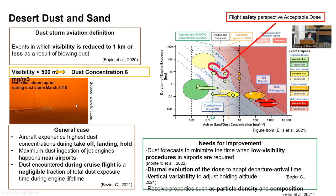Extreme dust episodes have affected even Heraklion Airport in Crete in March 2018. The chart on the right, taken from a paper by Ellis and others, presents the relationship between duration of engine exposure to dust, sand, or ash in relation to the concentration of the plume, based on specific events represented by elliptic shapes. Certain segments are defined according to constant dose of engine exposure, ranging from imminent to medium and long-term impact.